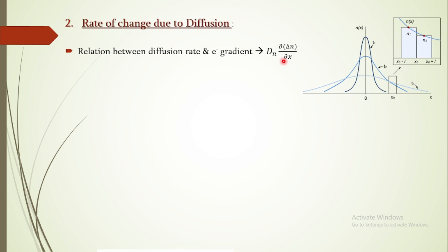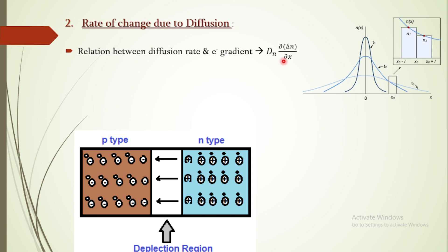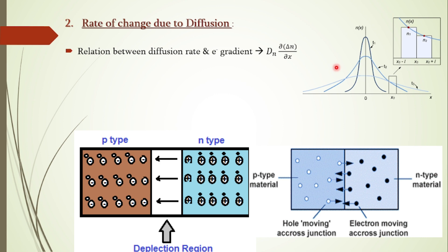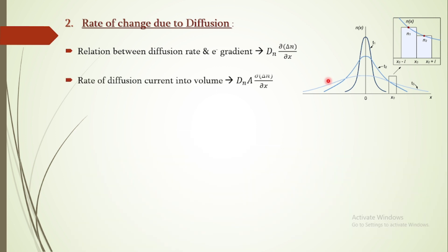When a p-n junction is formed, the n-side has majority electrons and the p-side has majority holes. Due to the huge concentration gradient at the junction, electrons from the n-side diffuse toward the p-region and holes from the p-side diffuse toward the n-region. This diffusion causes a change in carriers. The rate of diffusion current entering the volume at plane 1 is given by D_n · A · ∂(delta n)/∂x.